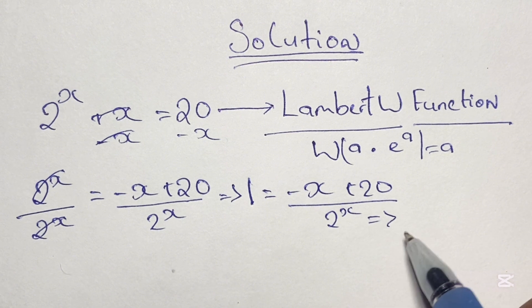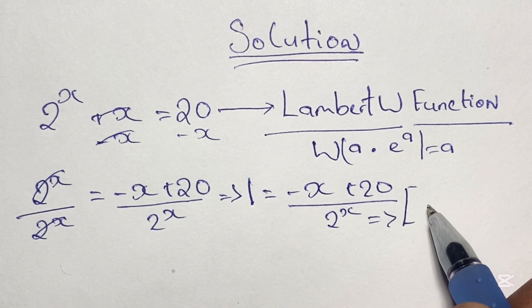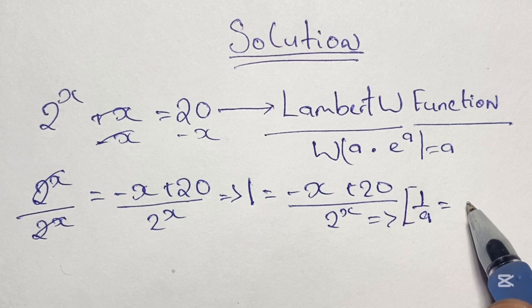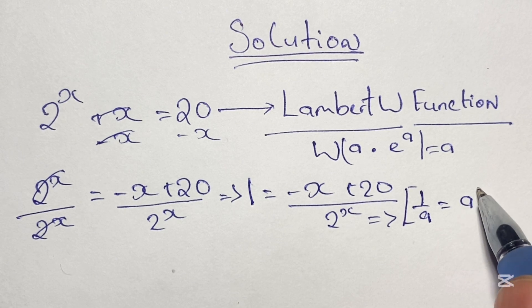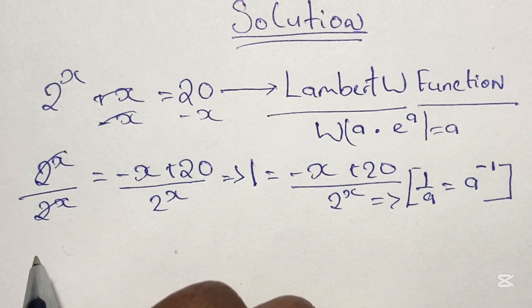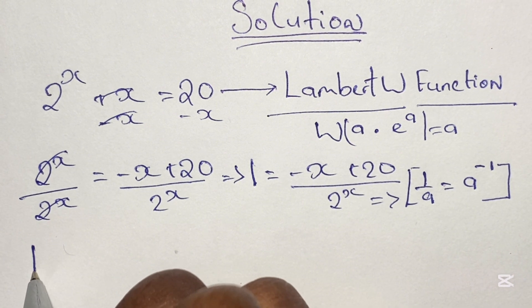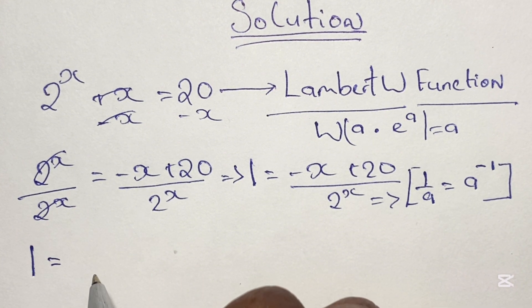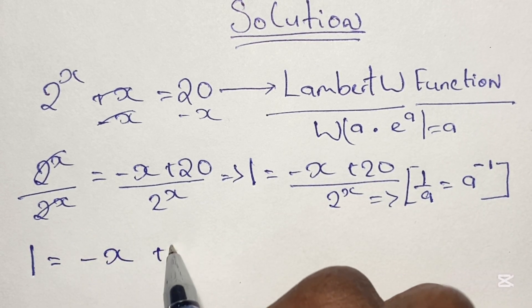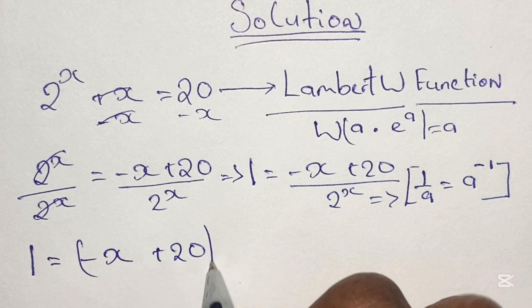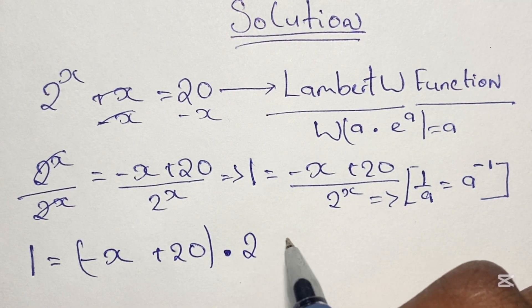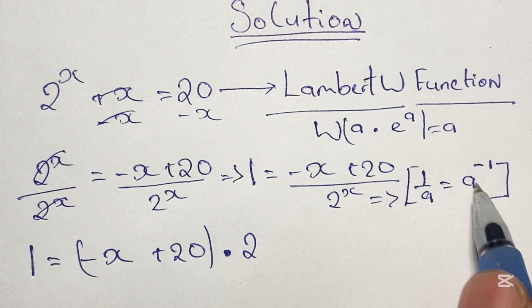Now we can express 2 to the power of x using the law of indices where 1 over a is the same as a to the power of negative 1. So we can rewrite our equation using this power rule: 1 is equal to negative x plus 20, in brackets, times 2 to the power of negative x.